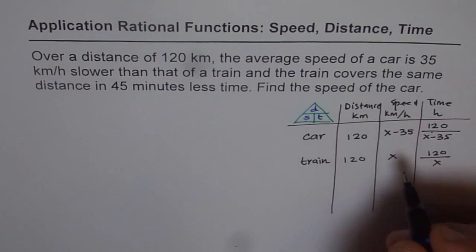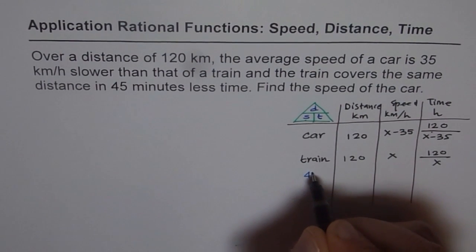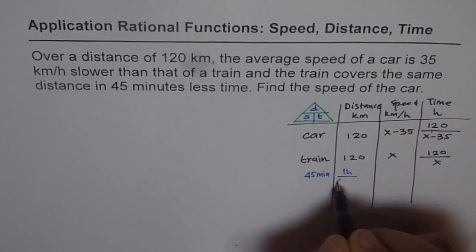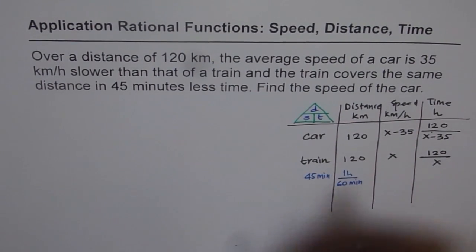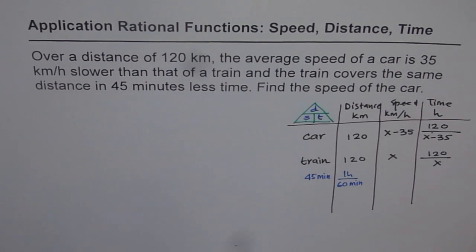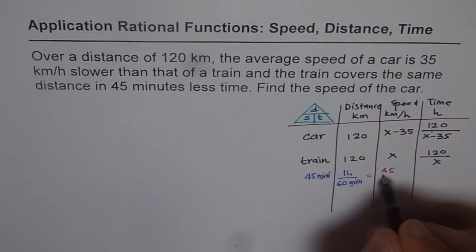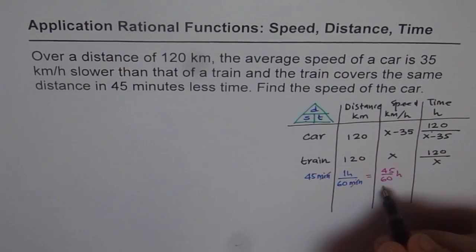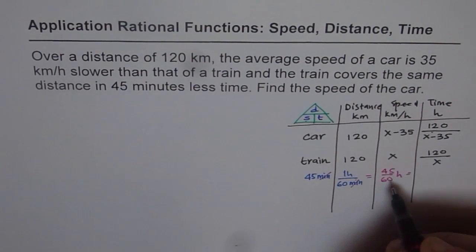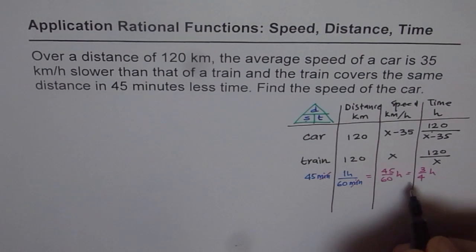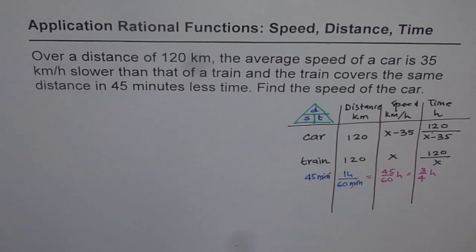Since we are talking about time in hours, it's a good idea to convert 45 minutes to hours. In one hour we have 60 minutes, so 45 minutes equals 45 over 60 hours. Dividing numerator and denominator by 15 gives us 3 over 4. So the time difference between the two is 3 over 4 of an hour.